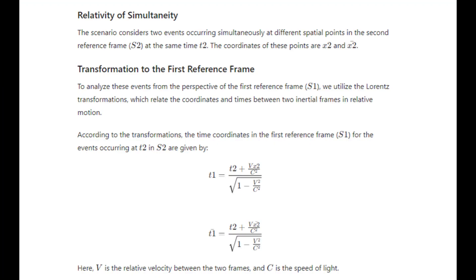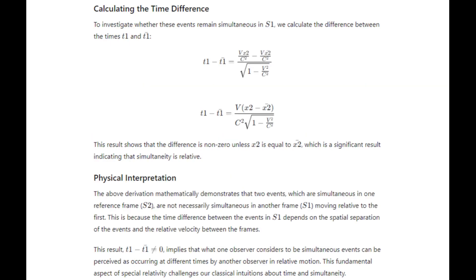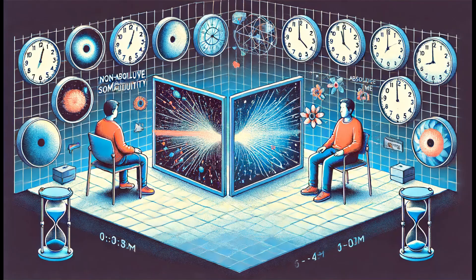To investigate this, we need to transform the time at which these events occurred from the second reference frame to the first. This transformation involves taking into account the relative speed and the speed of light between the two frames. After transforming the times of the events to the first reference frame, we calculate the difference between these transformed times. The result of this calculation shows that the two events do not occur simultaneously in the first frame.